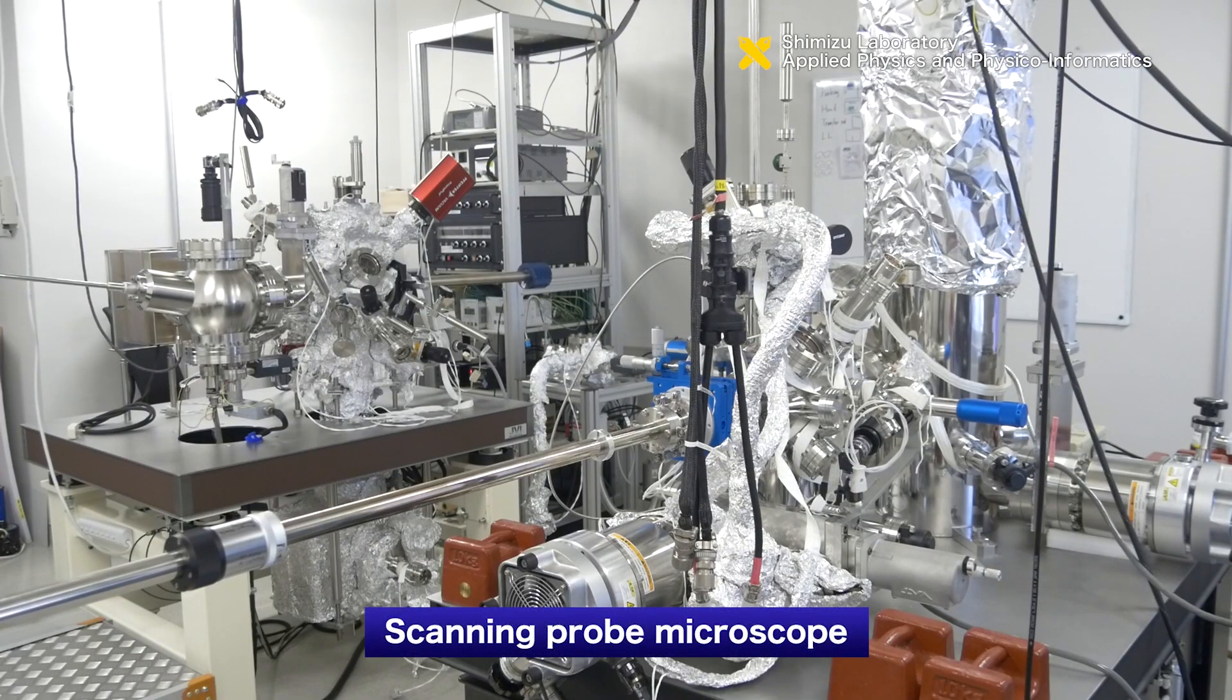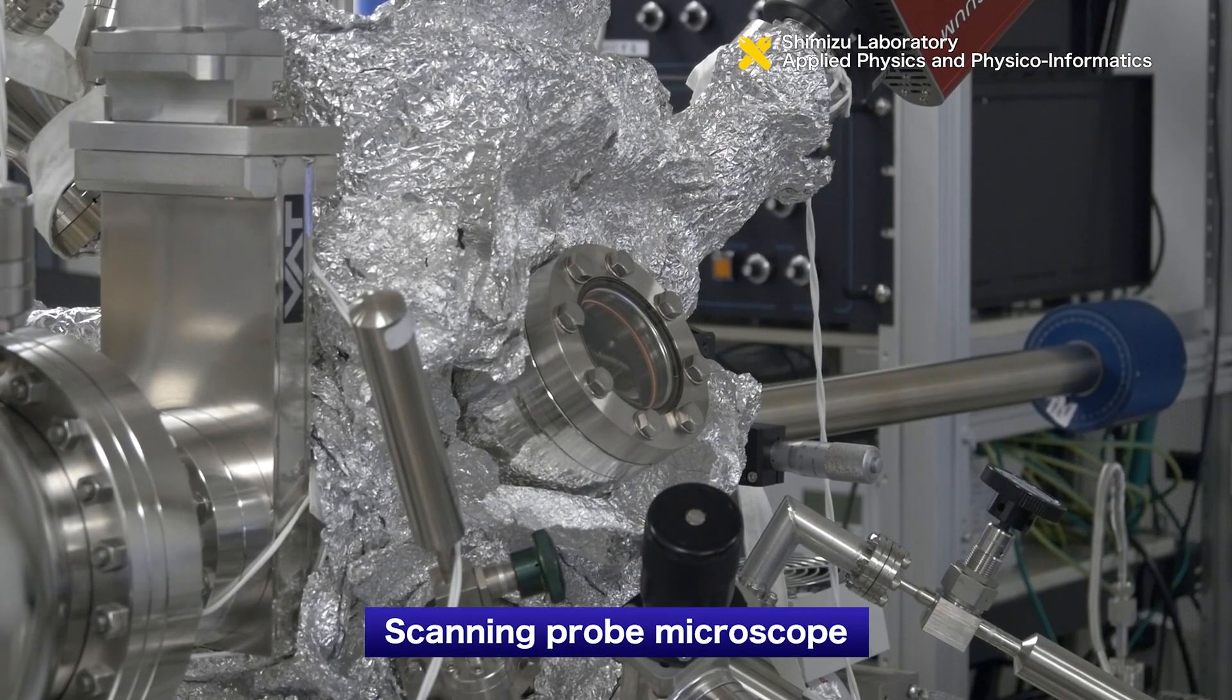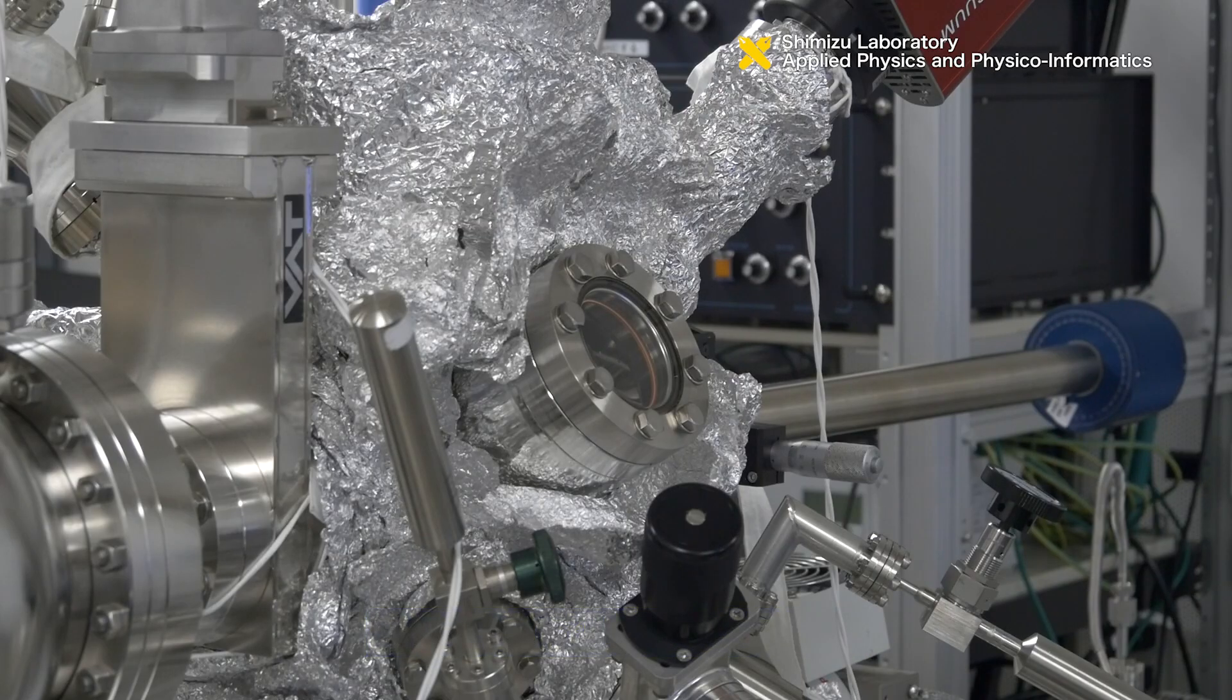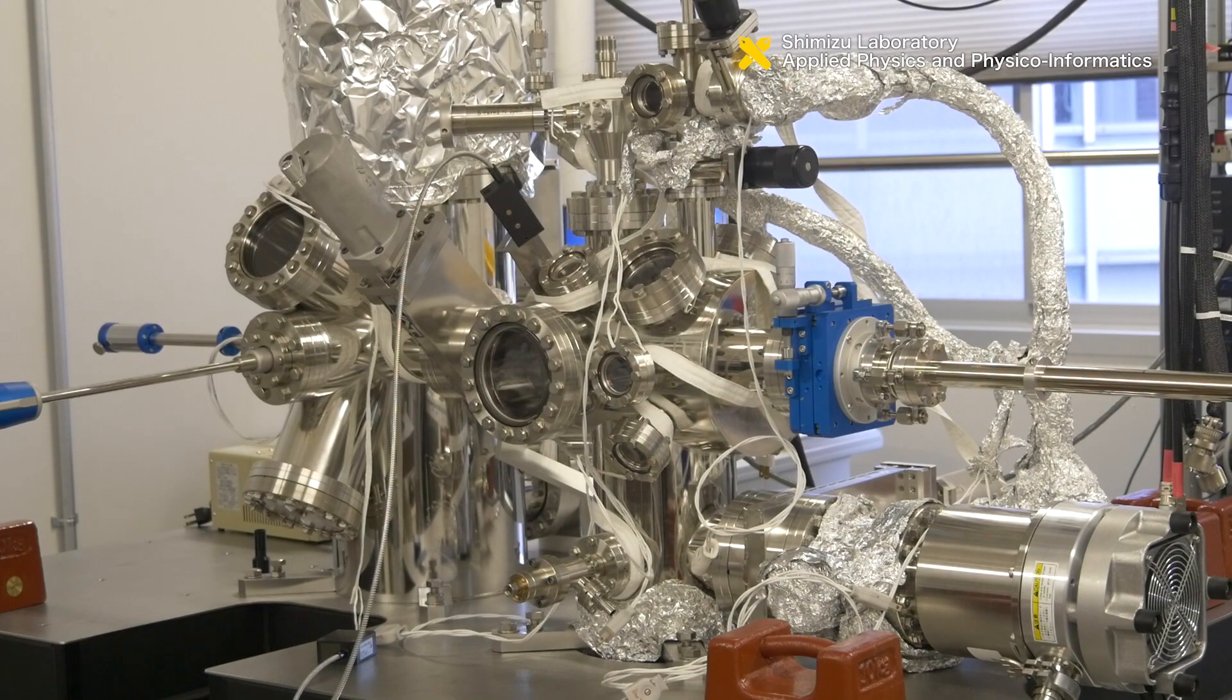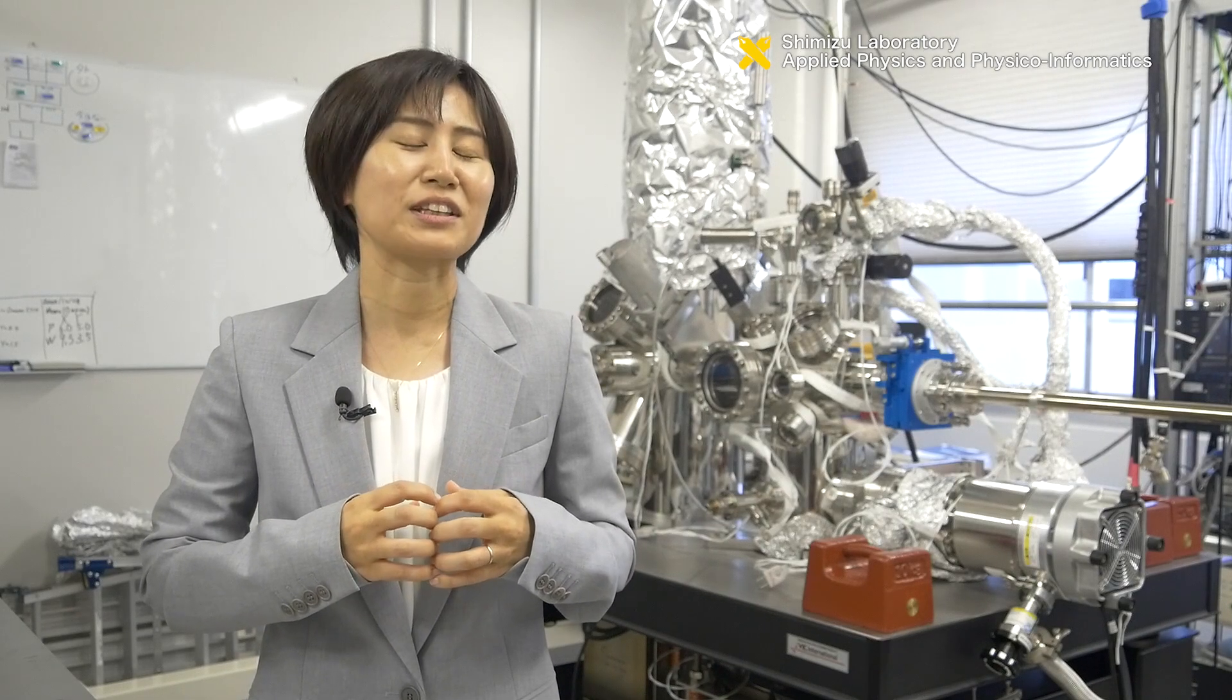Here's the microscope, called scanning probe microscope, used to study surfaces and interfaces. With this instrument, we can spatially resolve how atoms are aligned and where molecules are absorbed. We really see single atoms and molecules.